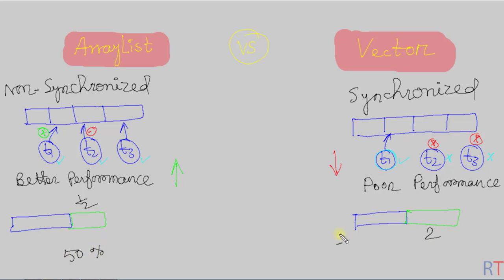So these are the key differences between ArrayList and Vector.